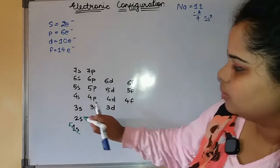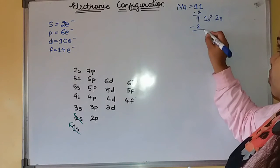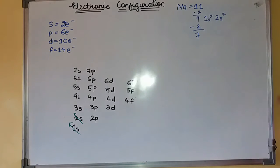Then you have to fulfill 2s. Write down 2s and subtract 2. 2 plus 2 is 4, and 7 is the remaining.